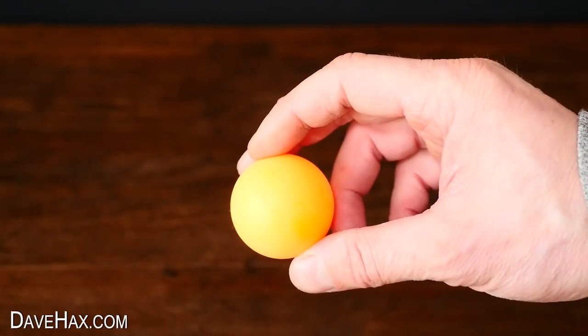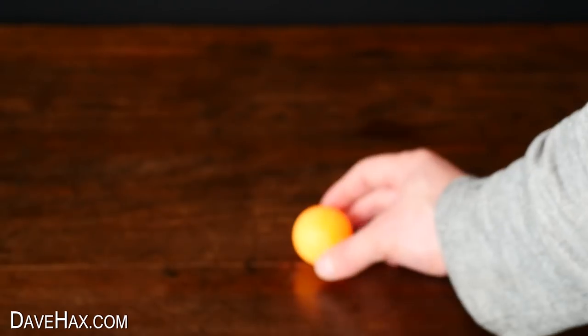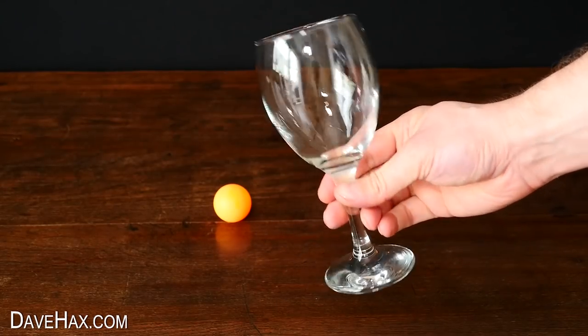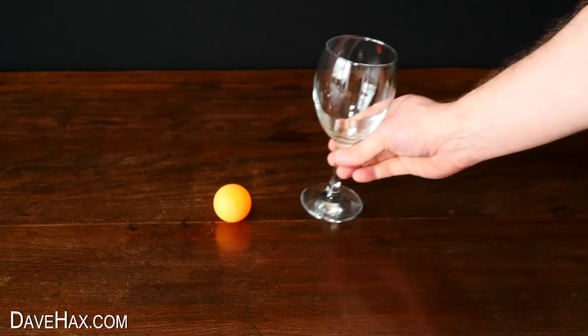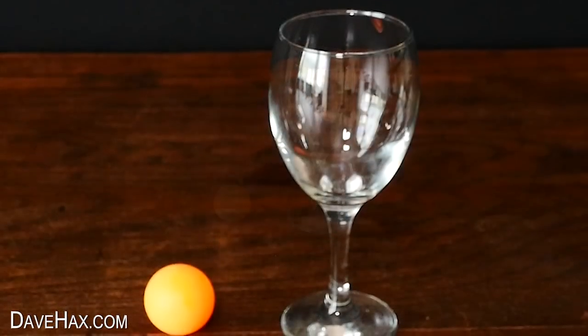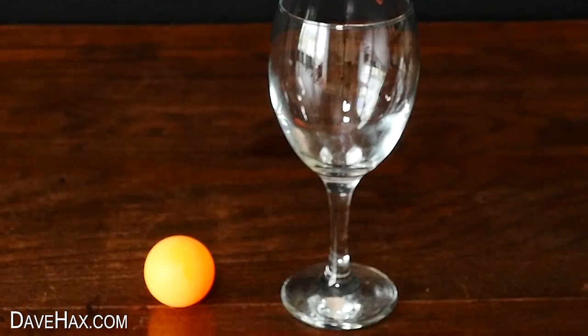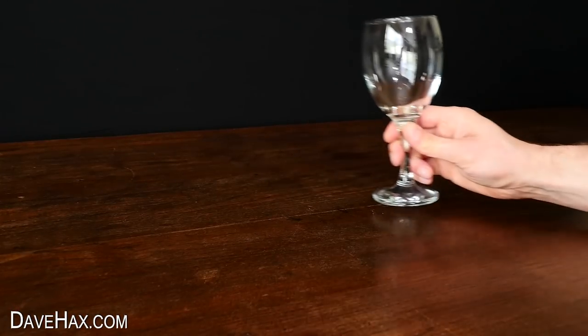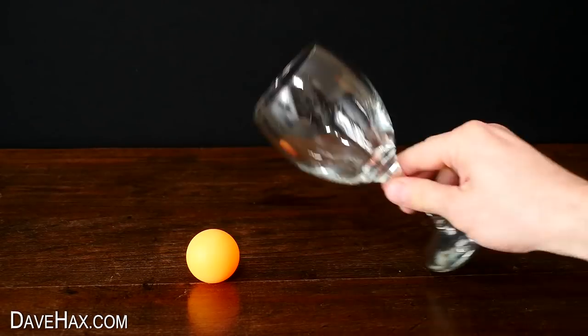Now here's a great experiment if you've got slightly older kids. Take a ping pong ball and a wine glass like this, and challenge them to find three different ways to pick up the ping pong ball in the glass. But they're only allowed to touch the glass. The first way is to scoop up the ball, which is difficult if you try like this. It can be done.